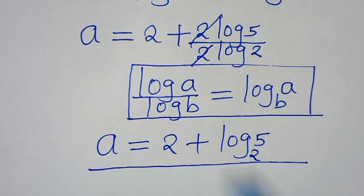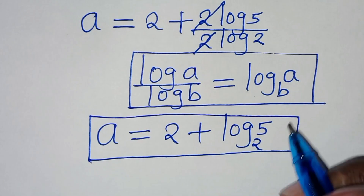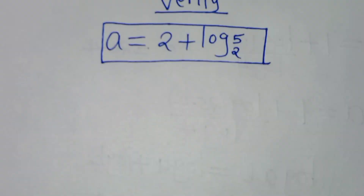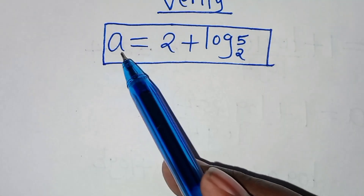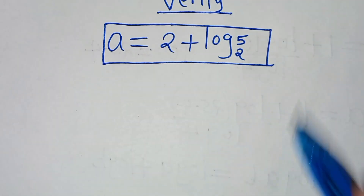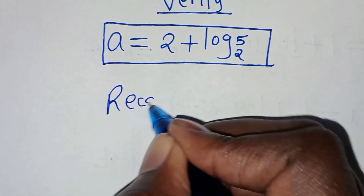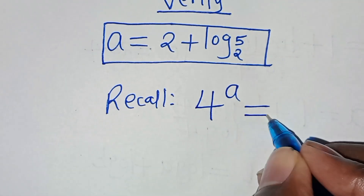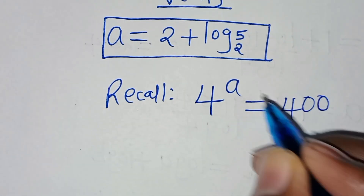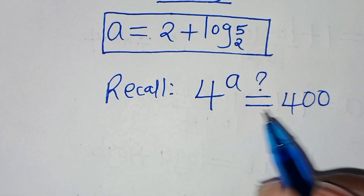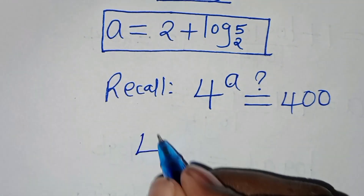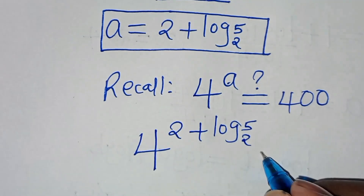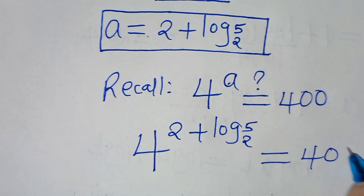So the value of a is 2 plus log 5 to base 2. The next step is to verify that this value satisfies the equation. We have 4 to the power of a equals 400. Substituting, we get 4 to the power of (2 plus log₂5), which should give us 400.